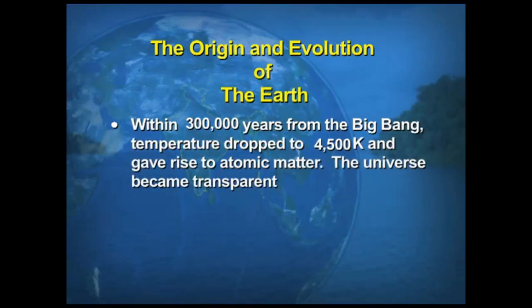Within 300,000 years from the Big Bang, the temperature dropped to almost 4,500 Kelvin and gave rise to atomic matter. The universe became transparent. These stages talk about the formation of the universe as a whole and do not give any specific example of only the formation of the Earth. This also talks about the formation of the star — that is, the formation of the present remnant, the sun itself.